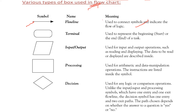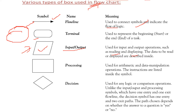For that, we have a flow line, which is used to connect symbols and shows the flow of logic. The terminal symbol — which can be a circle or an ellipse — represents the beginning, start, and end of a task. The parallelogram is used to show input and output operations like reading and displaying data. The processing symbol — a rectangle — is used for arithmetic and data manipulation operations, with instructions listed inside.